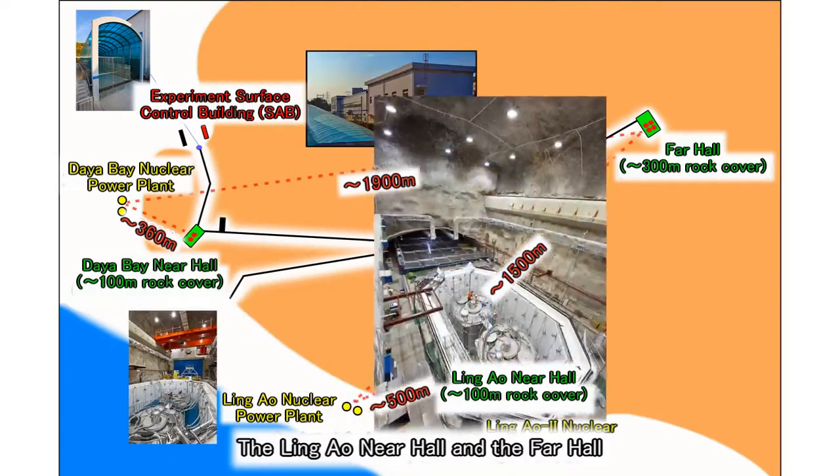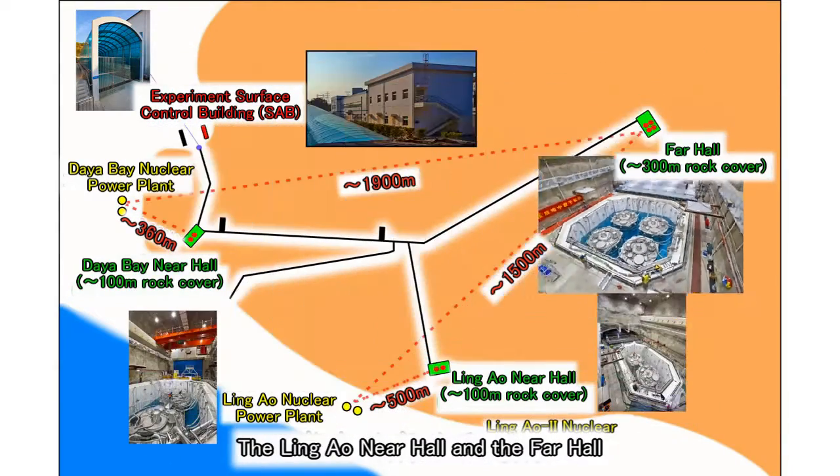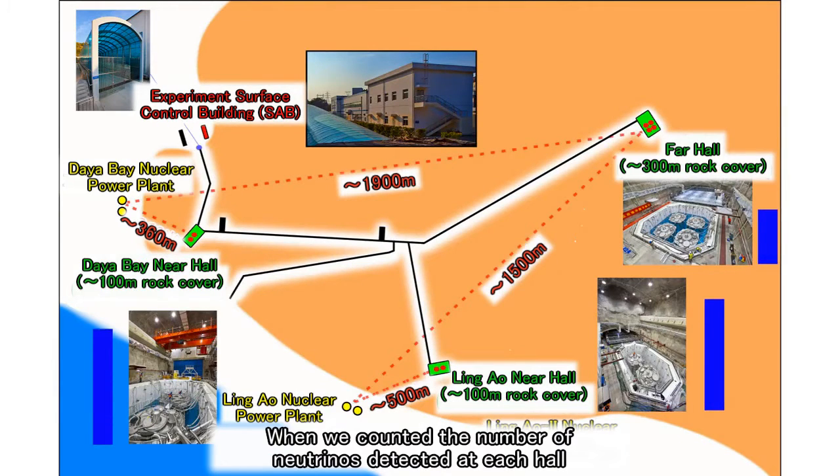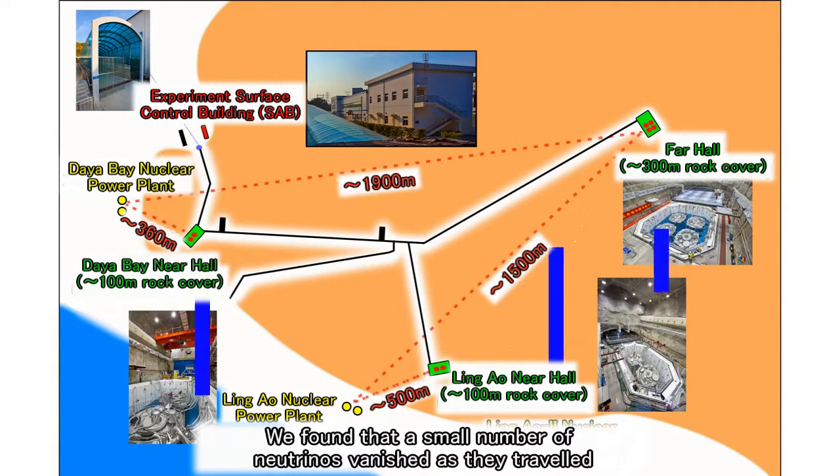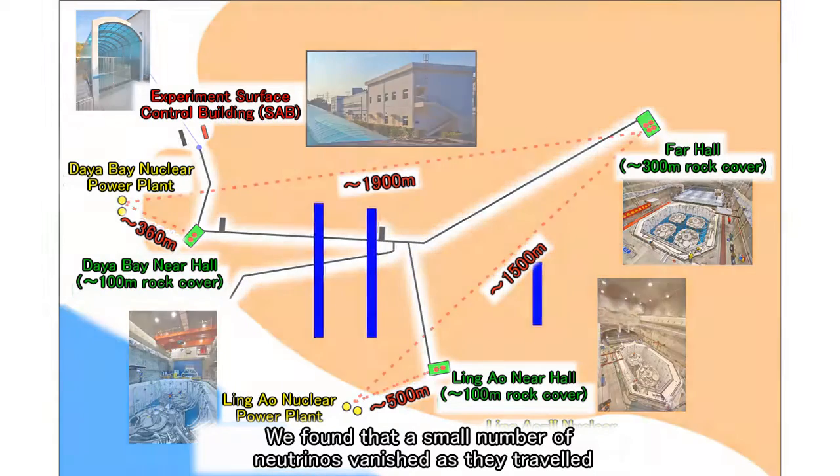We call them the Daya Bay Near Hall, the Ling Ao Near Hall, and the Far Hall. When we counted the number of neutrinos detected at each hall, we found that a small number of neutrinos vanished as they traveled.